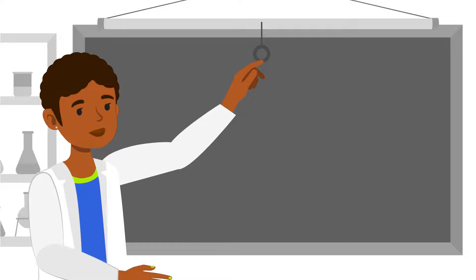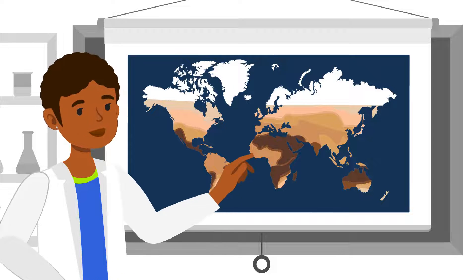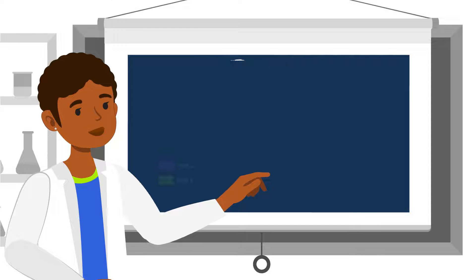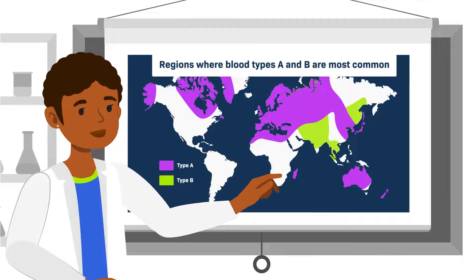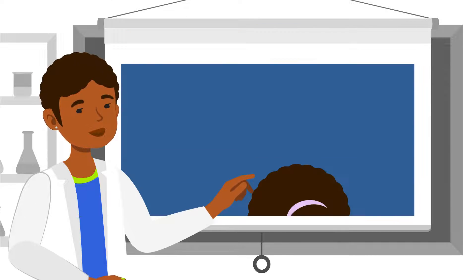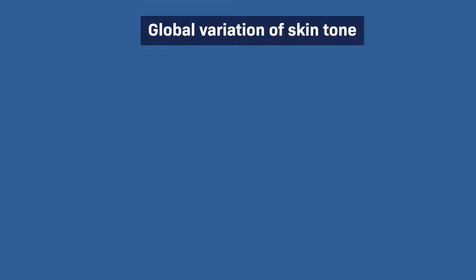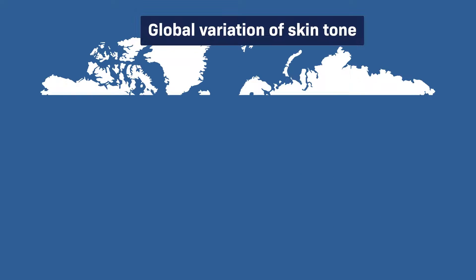Let's compare two examples of traits: skin tone and blood type. Skin tone is a trait that is often associated with our conceptions of race. However, the variation in human skin tones today is a direct result of adaptation to the sun's intensity through natural selection.